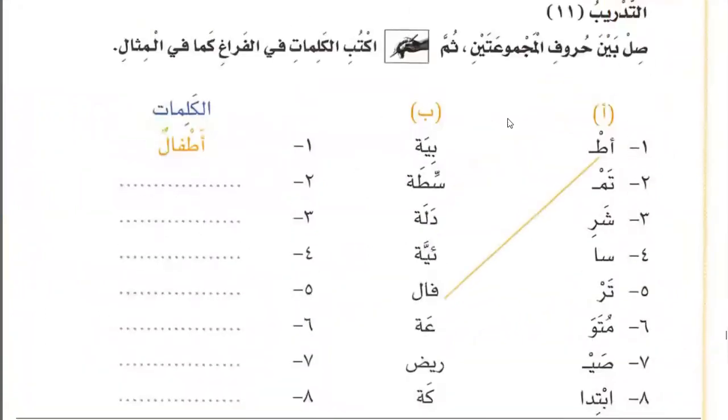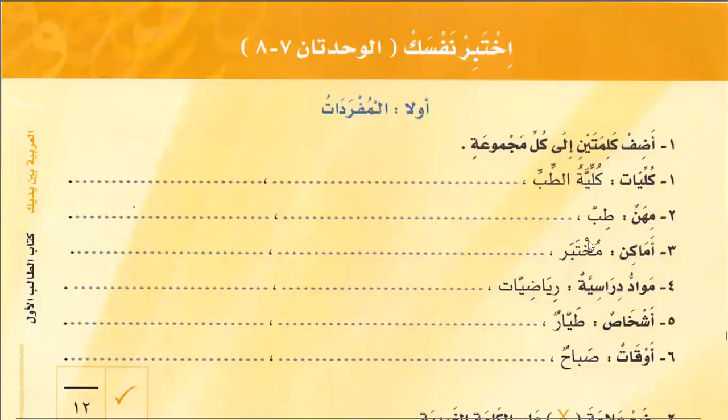In this question you will join the letters to make a part of a story. For example, you write tamris here, then you join sharika and write sharika here. In this way join them and write in the blanks. Then we have a very important vocabulary question — al-mufradat — asking you to add two words to each group. In this group write the names of two faculties, two professions, two places, two subjects, two persons, two times.